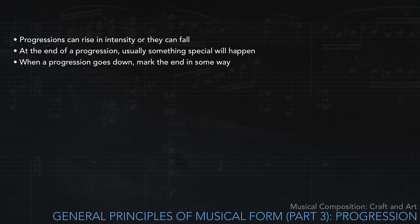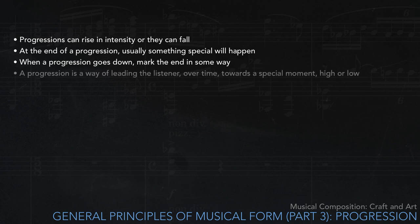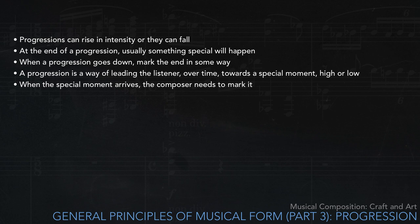Similarly, when a progression goes down — say towards a cadence — it's a good idea to mark the end in some way. For example, the orchestration can change, or the harmony can do something special. The point here is that a progression is a way of leading the listener, over time, towards a special moment — high or low. When the special moment arrives, the composer needs to mark it so the listener feels that the goal has been achieved.